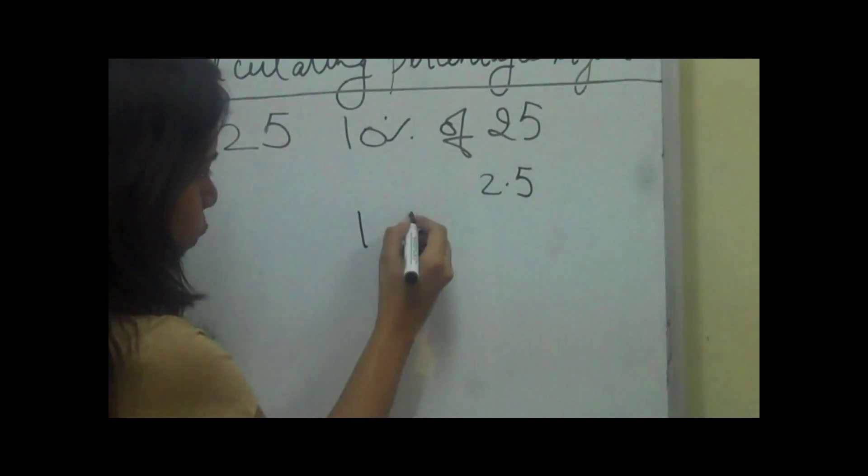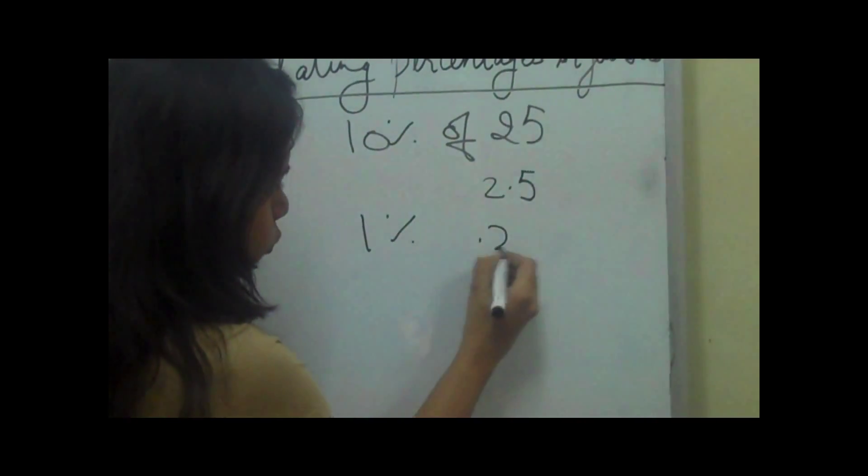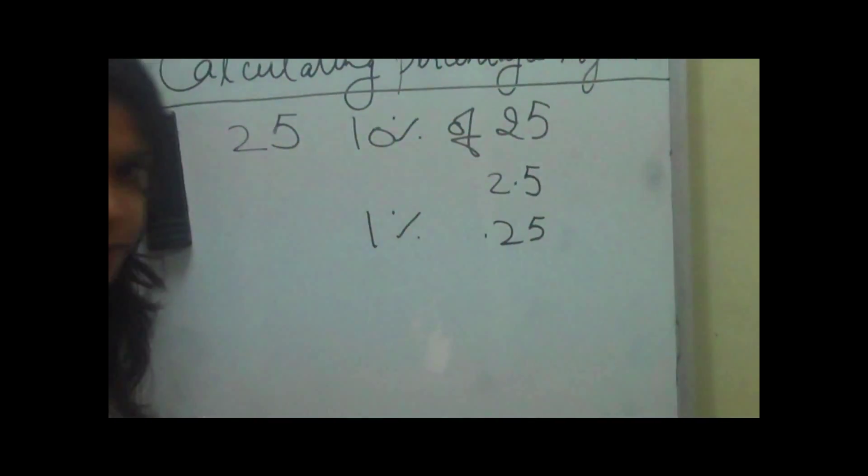If we need to calculate 1 percent of 25, it is 0.25. That is, we shift the decimal two digits ahead.